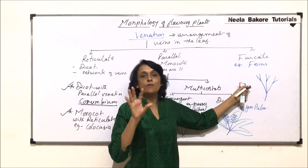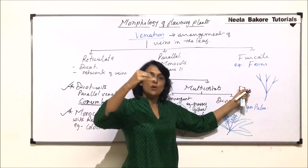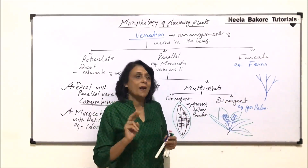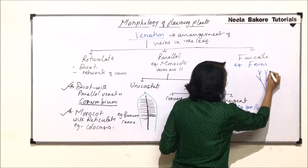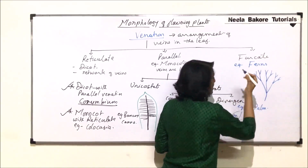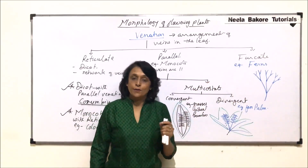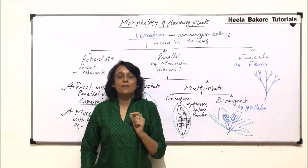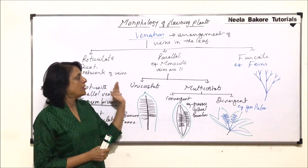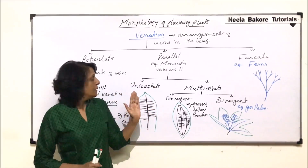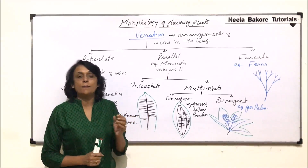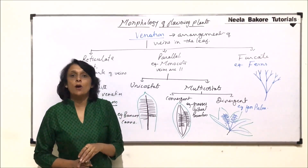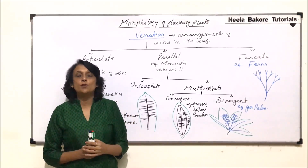In furcate venation, we would not see any kind of reticulation. The lower part has only the main veins, and as we go towards the upper side of the leaf, we find the branching — and every time it divides, it gives rise to two branches only. This is the characteristic feature of pteridophytes or ferns. So according to venation, there are three main categories: reticulate, parallel, and furcate. Because our chapter is about flowering plants — angiosperms — we are restricting ourselves to those examples only. On the basis of venation, we can also identify whether the plant is a monocot or a dicot, because there is a distinct difference in the arrangement of veins.